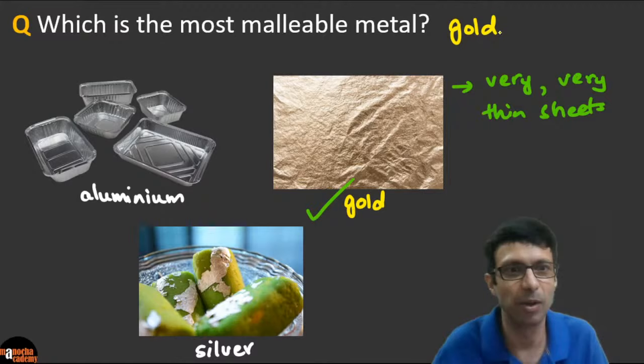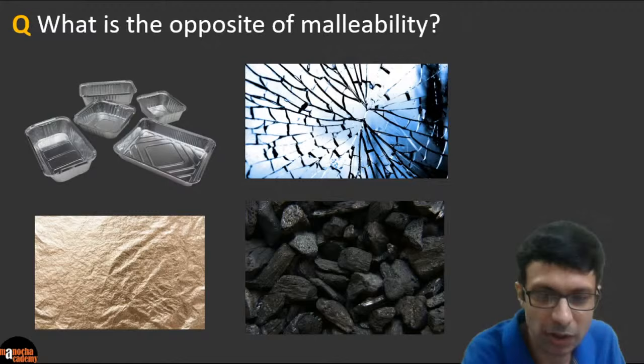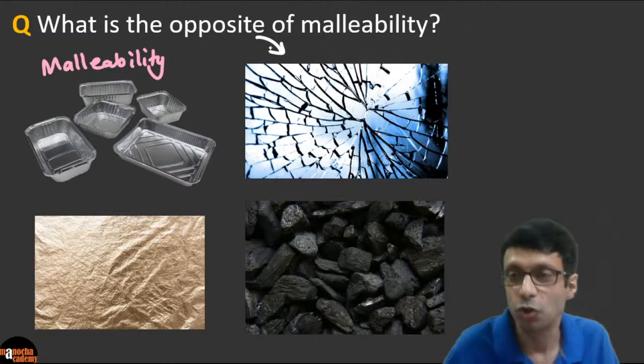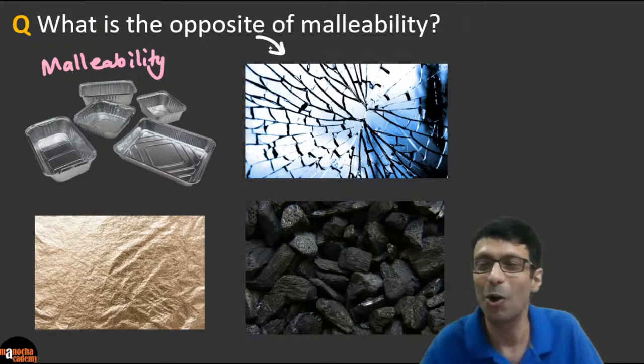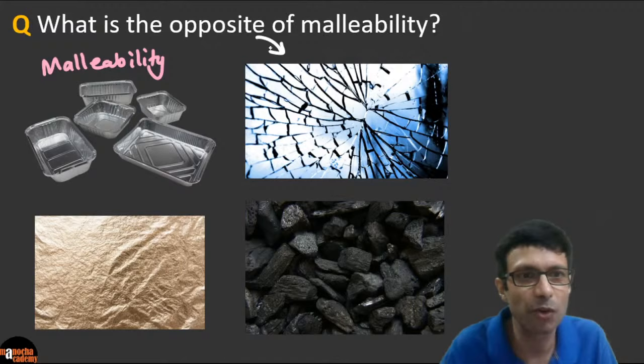What is the opposite of malleability? When you hit coal or glass, you cannot beat it into thin sheets — it breaks. Malleability means you can beat it into thin sheets. The term for the opposite is brittleness.